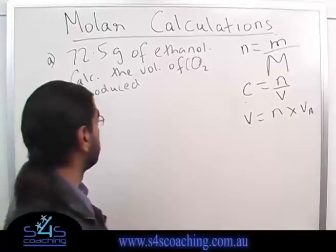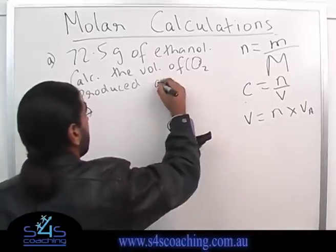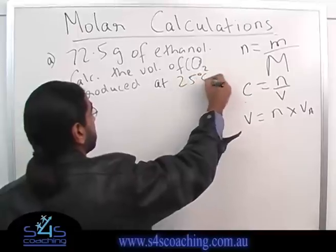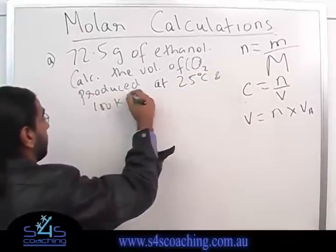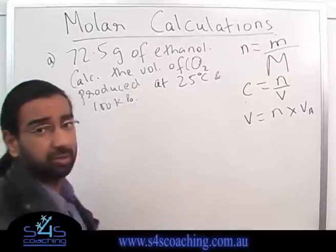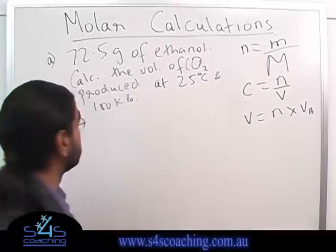Alright, so I want you to calculate the volume of carbon dioxide produced at 25 degrees Celsius and 100 kPa. So again, the four steps. Step one, write a balanced equation.